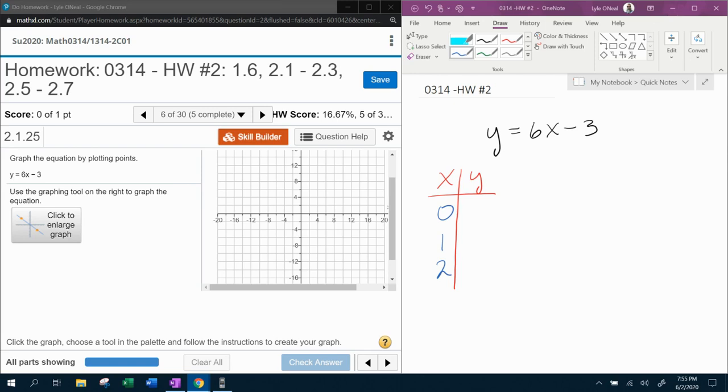They want us to graph the equation by plotting points. Over here I've already got the equation written down, y equals 6x minus 3. We're going to use a table of values where I've already picked 0, 1, and 2.